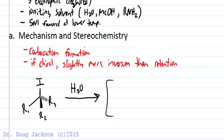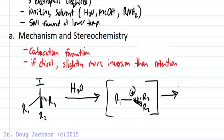And we end up with our planar carbocation, empty p orbital. There's our intermediate.